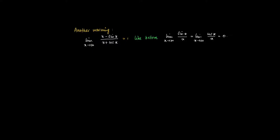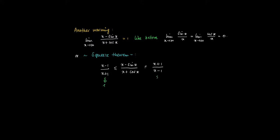This can also be seen using the squeeze theorem (or hamburger theorem). We pack (x − sin x)/(x + cos x) between two terms converging to 1. The numerator is at most x + 1 and the denominator is at least x − 1, giving the upper bound (x + 1)/(x − 1). On the other side, we make the numerator smaller and the denominator larger for the lower bound. Since both bounds converge to 1, the expression in the middle must also converge to 1.